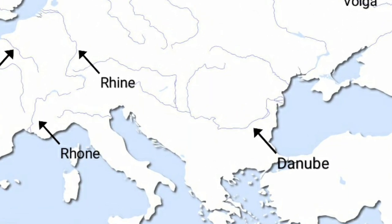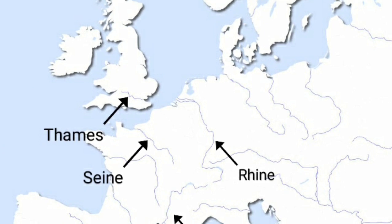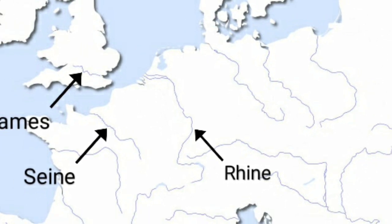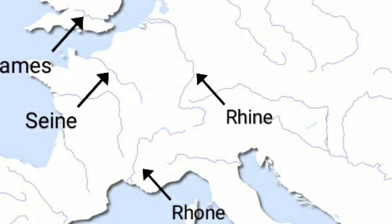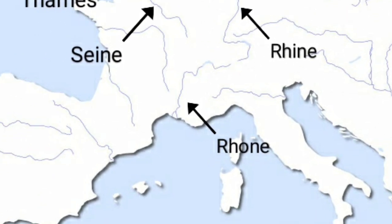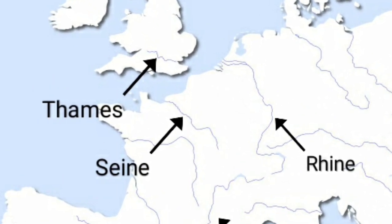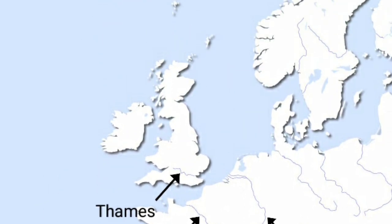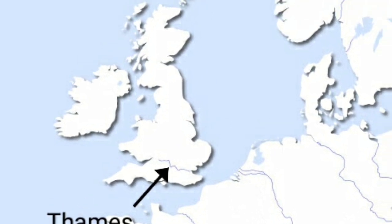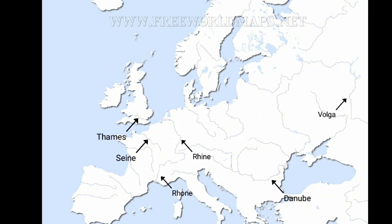Next, we have the Danube, which falls into the Black Sea. Then we have the river Rhine, which flows into the north. Next, there is another river that flows into the south, just below the Rhine — that is called the Rhone River. Next, we have a very small yet very famous river called the River Seine, which flows through Paris. And the last river is the River Thames, which flows through London in England. All these six rivers are very important rivers of Europe, and you are supposed to mark all of them with blue pencil colour.